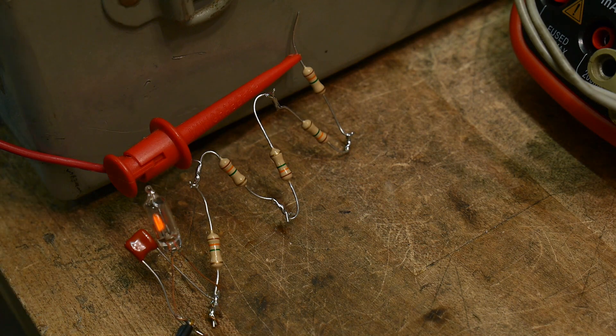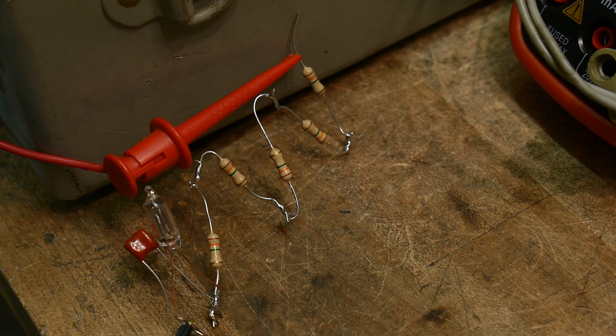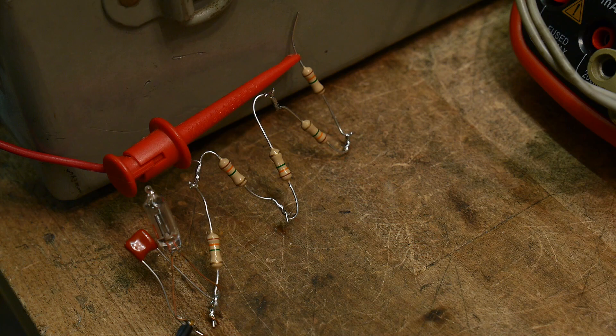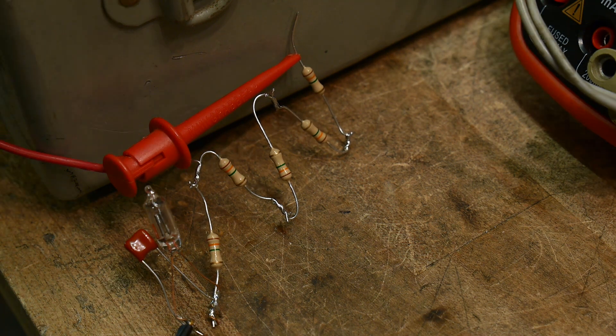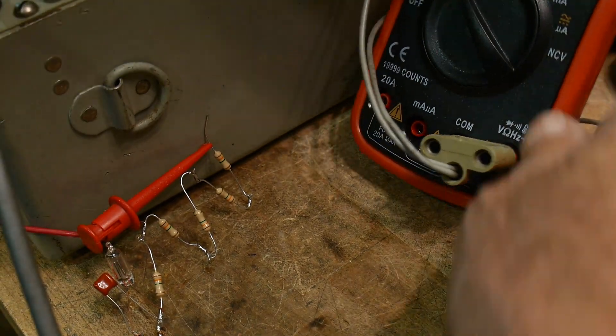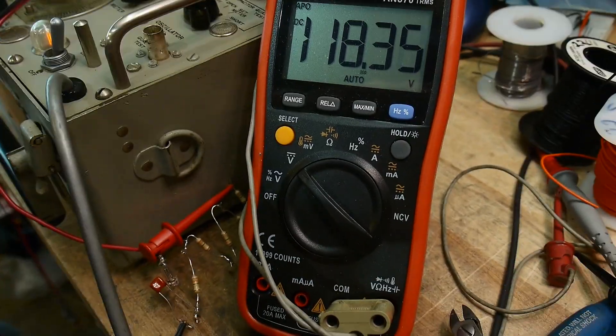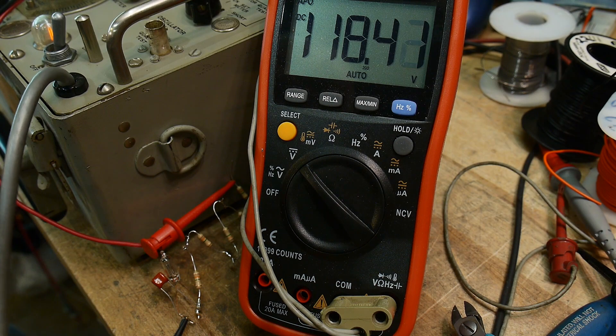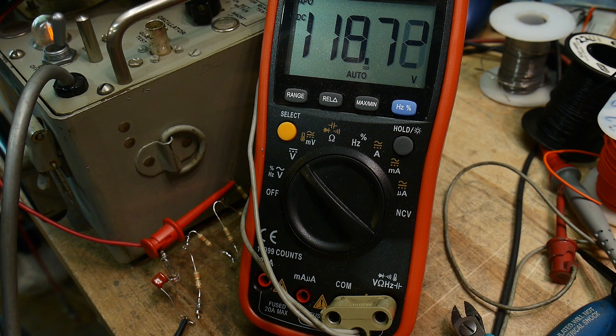And I can drop the voltage down a bit and it'll slow down. So here's 129 volts, 117 volts. It's getting pretty slow. Okay. Let me back up a bit so you can see the voltage in the camera too. There we go. 118 volts. It's flashing pretty slow.